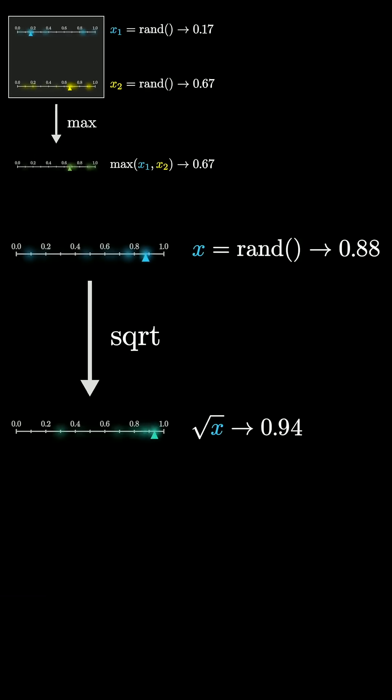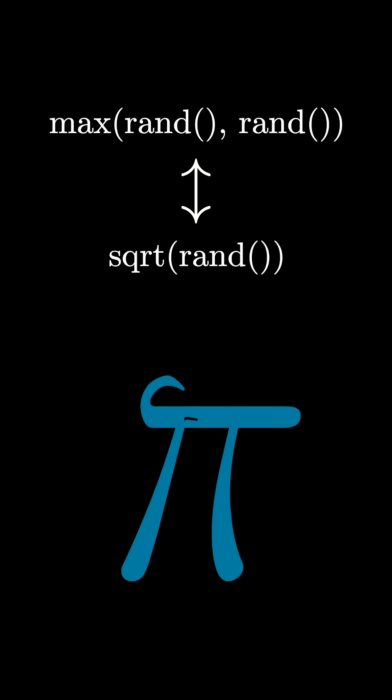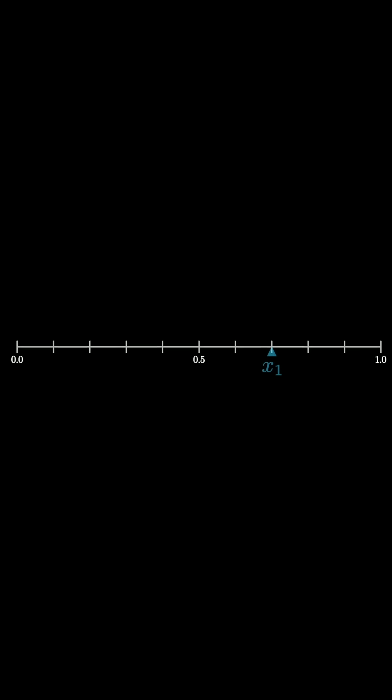The surprise is that both of these are the same, in the sense that the distribution describing your result is identical for both of these procedures. At first it just feels really wrong that computing a maximum and a square root could give you the same thing like this, but there's actually a really nice way to visualize why this should be true.